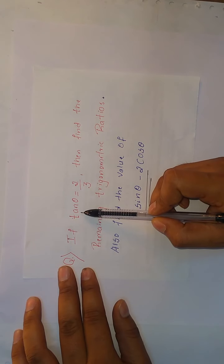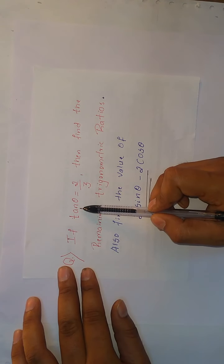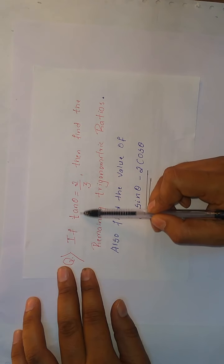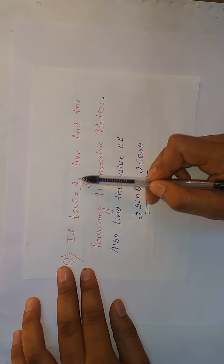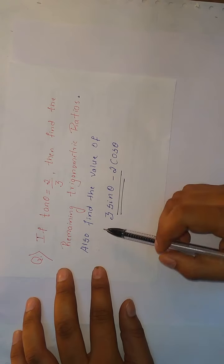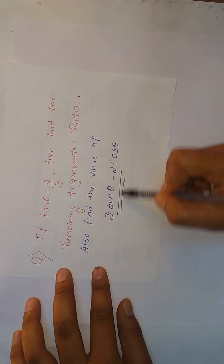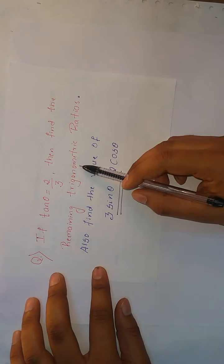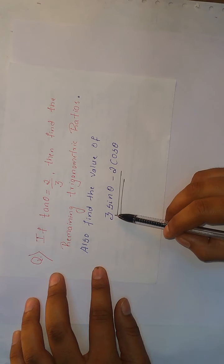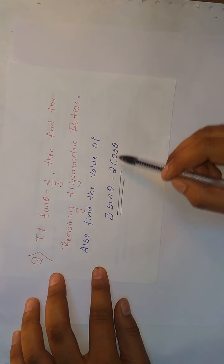For example, for tan θ, you can substitute sin θ, cos θ, all the six trigonometric ratios. You can use 2 by 3, you can use 3 by 5, 4 by 3, something like this. The remaining trigonometric ratios, they have asked us to find the value of 3 sin θ minus 2 cos θ.